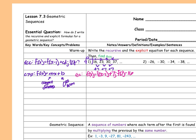And then we want my explicit equation. f(x) equals my common difference — in this case seven again — so 7x. And then my zeroth term, we found that: plus nine. Done. Once I find everything right here, all I'm doing is substituting in to these two equations.